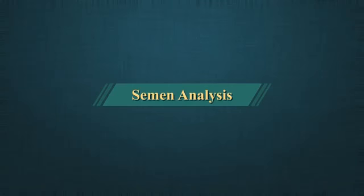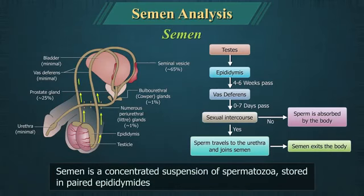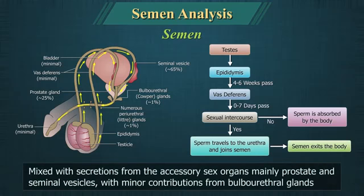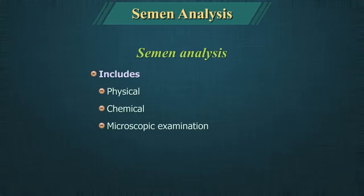Semen Analysis. Semen is a concentrated suspension of spermatozoa produced in the testes, stored in the paired epididymis, mixed with secretions from the accessory sex organs — mainly prostate and seminal vesicles — with minor contribution from the bulbo-urethral glands. Semen analysis is the physical, chemical and microscopic examination of semen.